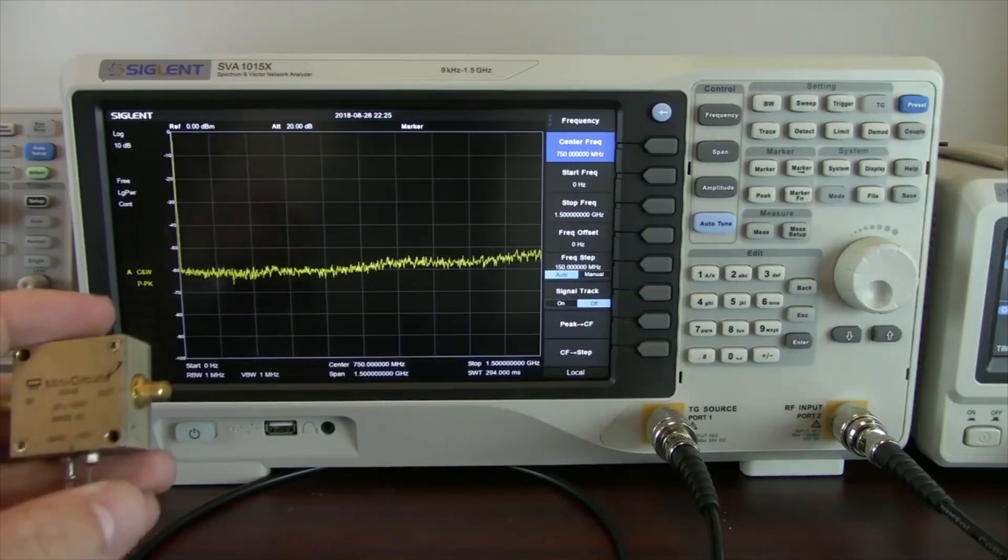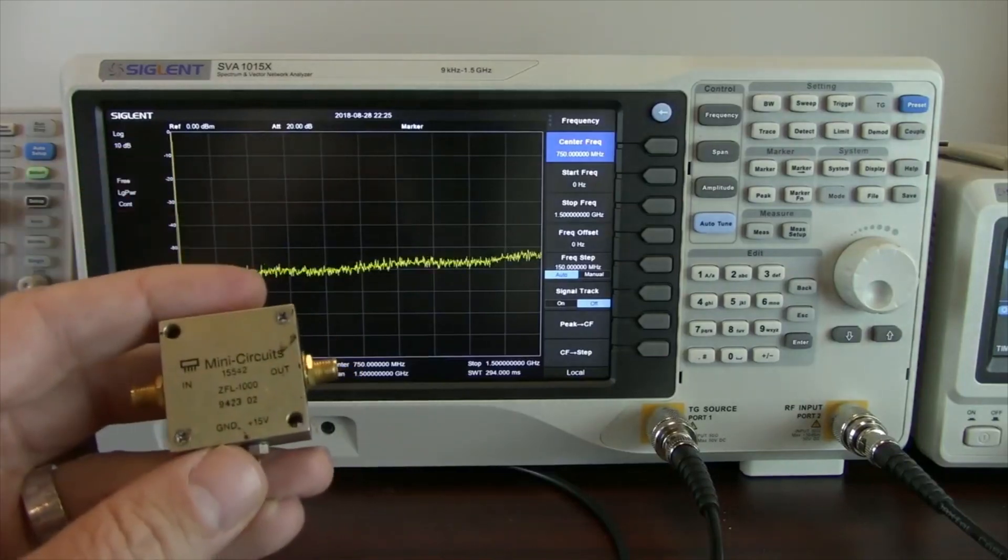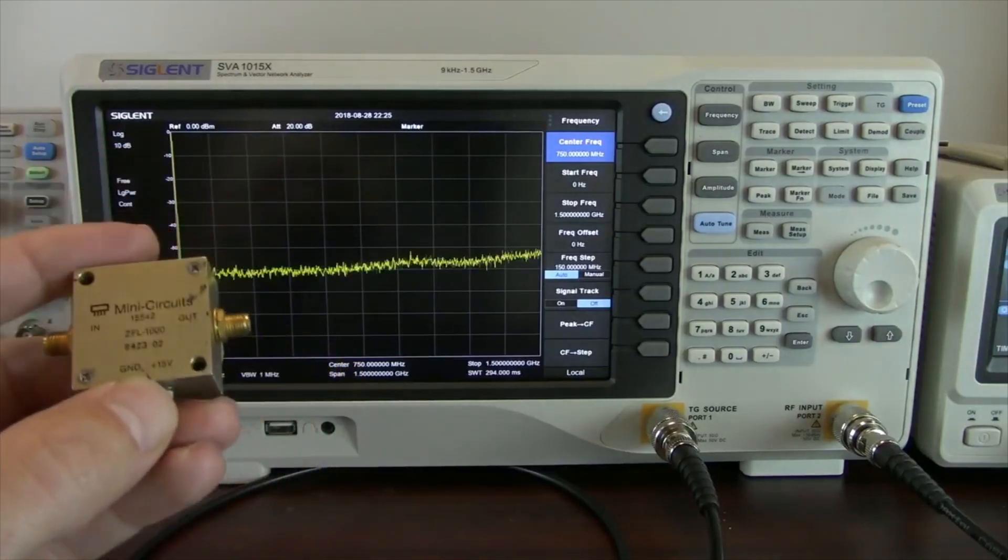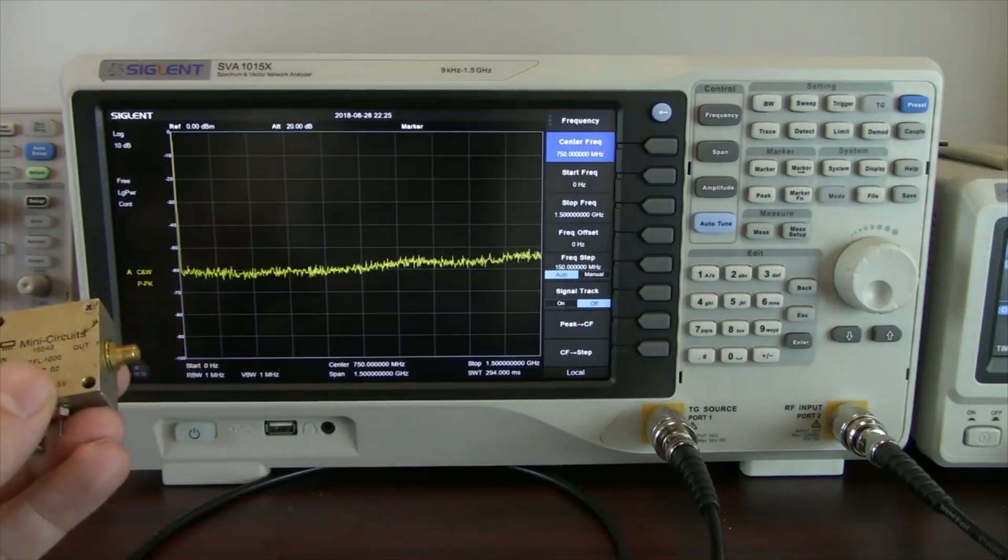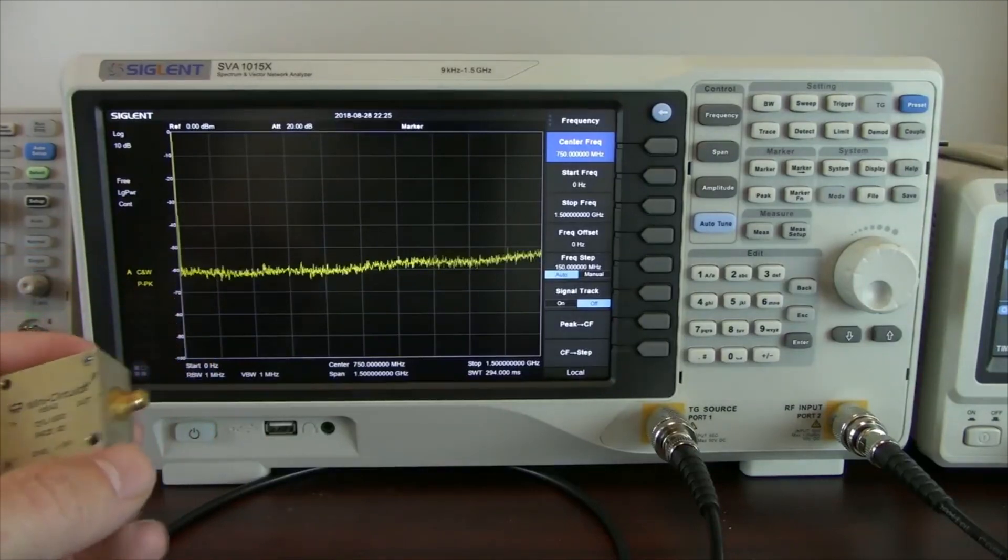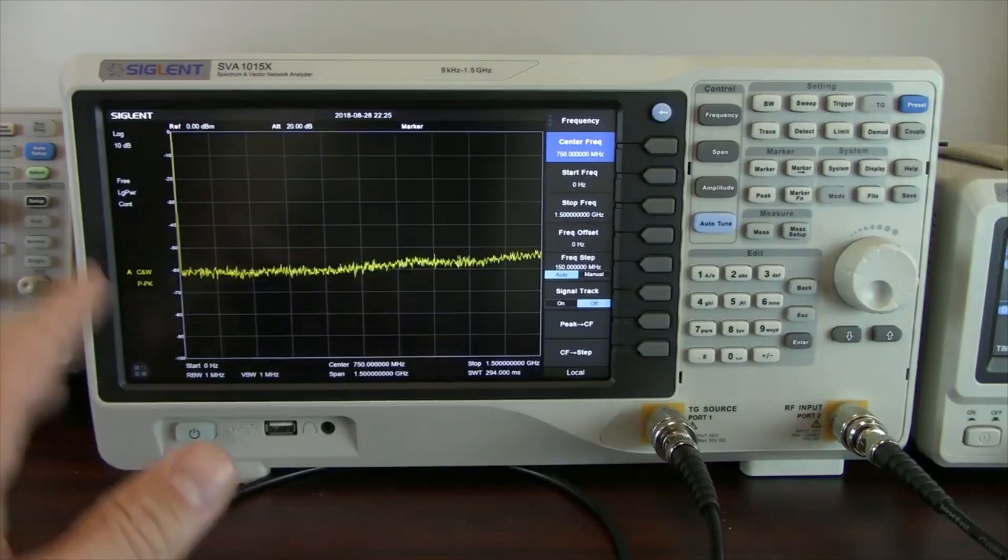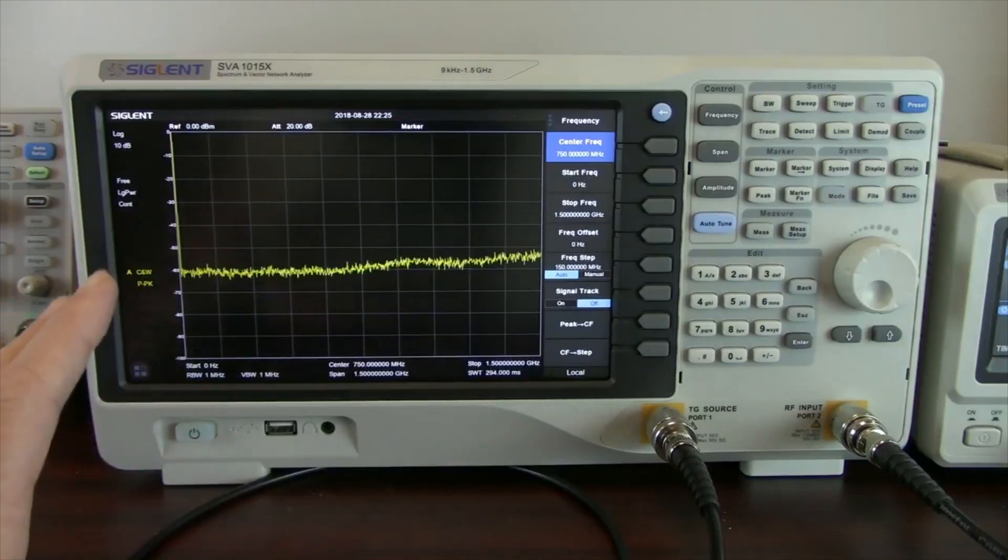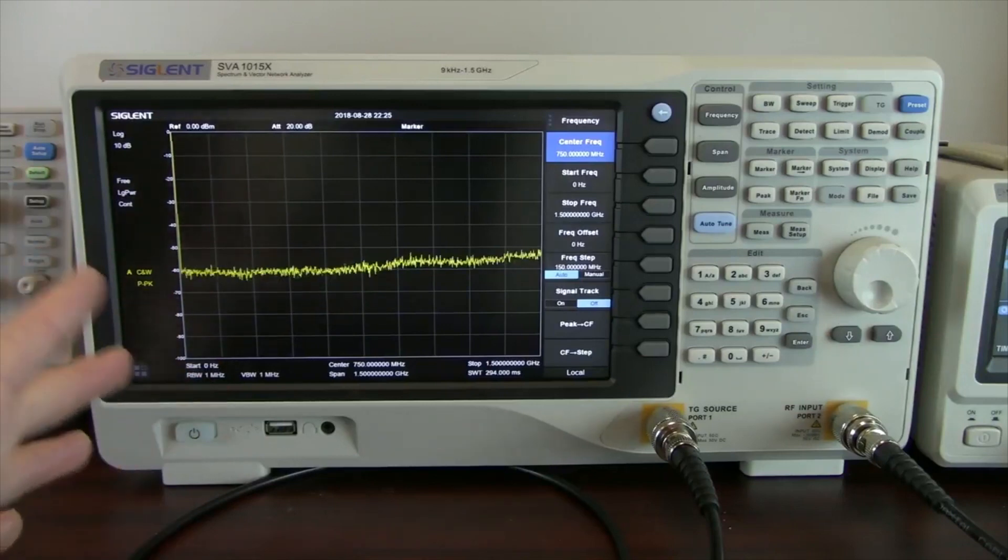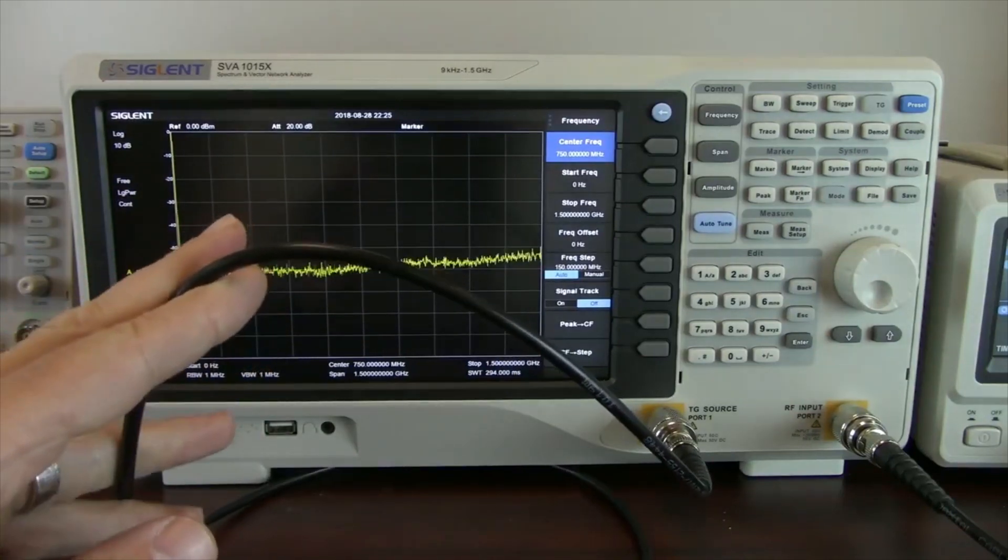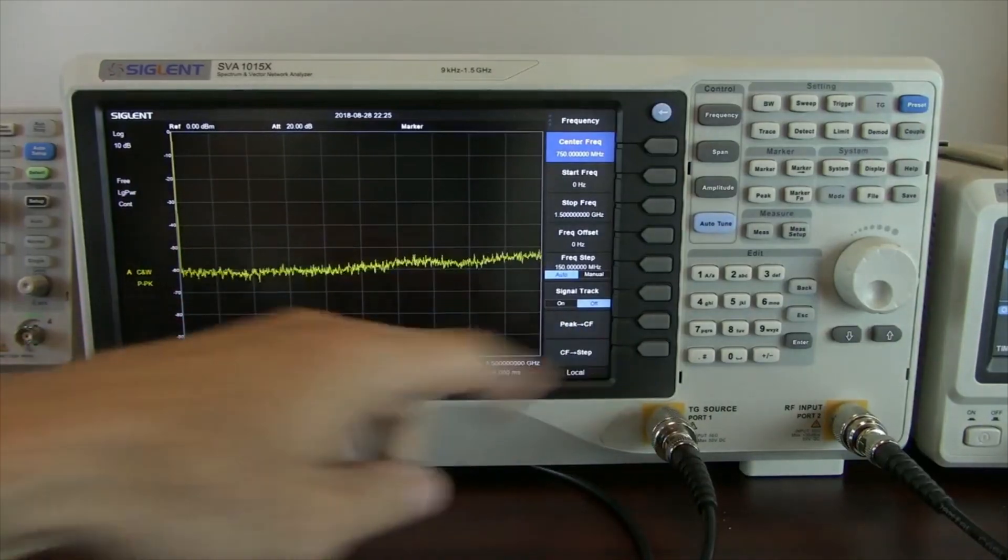So let's start by explaining a little bit more in detail what the amplifier is going to require. It has an input and an output. What we want to do is control the input signal and then measure the output signal. We can do that very easily with the spectrum analyzer. In this case, we're using the Siglent SVA1015X spectrum and vector network analyzer. It has a tracking generator source. You'll see that connected here, TG source.